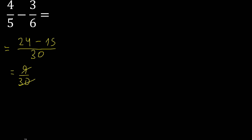Can be simplified because it can be divided by the same number, divided by 3. 9 divided by 3 is 3, 30 divided by 3 is 10. Finish.